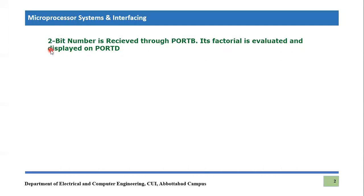This is the program or statement which is given. A two-bit number is received through Port B — that means Port B will be an input port. What we have to do is evaluate the factorial of that number and display it on Port D. Whatever the evaluated factorial is, we have to display it on Port D. So let's write the code for this application.